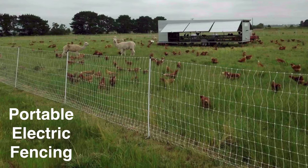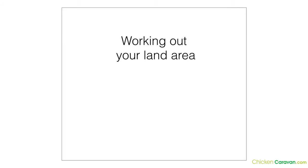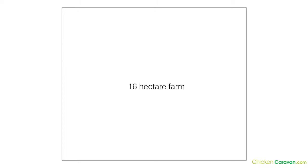I'll get into it. One of the first things I talk about is working at your land area. I'm going to go through this training fairly quickly — if I get the message across in five minutes, I'd rather that than take up an hour of your time with fluff. So, working at your land area: I've got a square here, a perfect square representing a 16-hectare farm — 16 squares, each square representing one hectare.